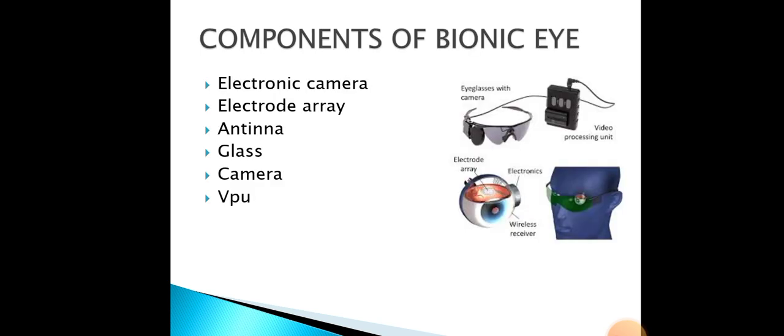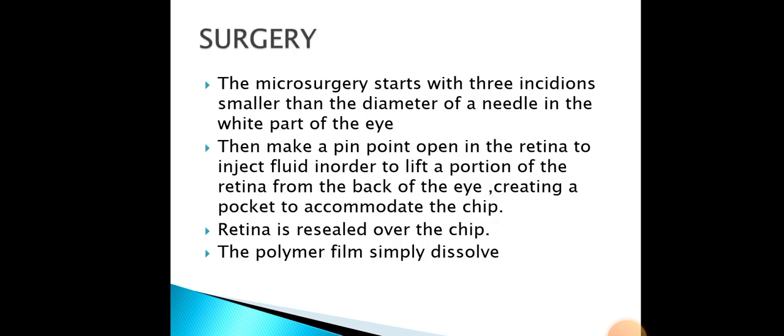Next, the components of the Bionic Eye. The main components used in this technology for the surgery are: the electronic camera, electrode array, antenna, glasses with a camera, and a VPU — Video Processing Unit. These four are the main components used for the Bionic Eye.